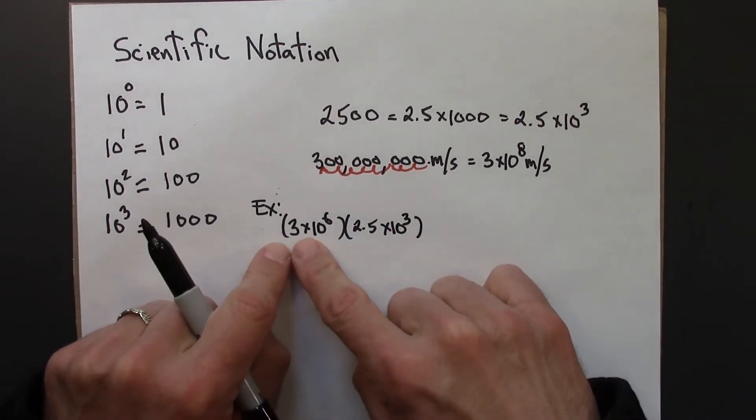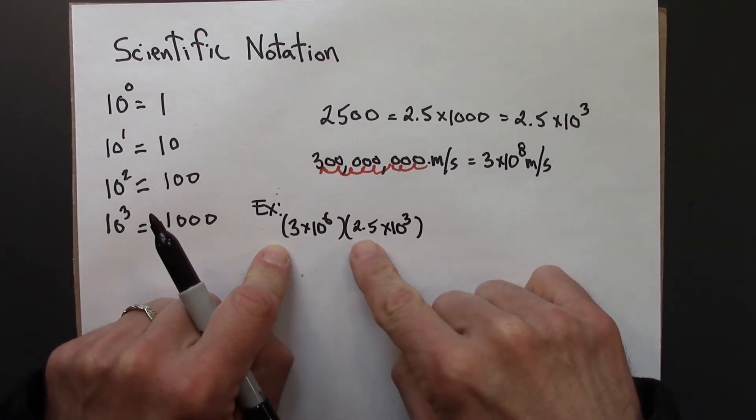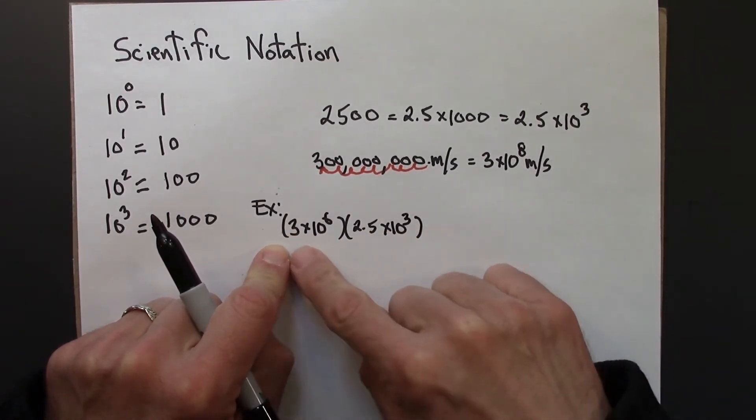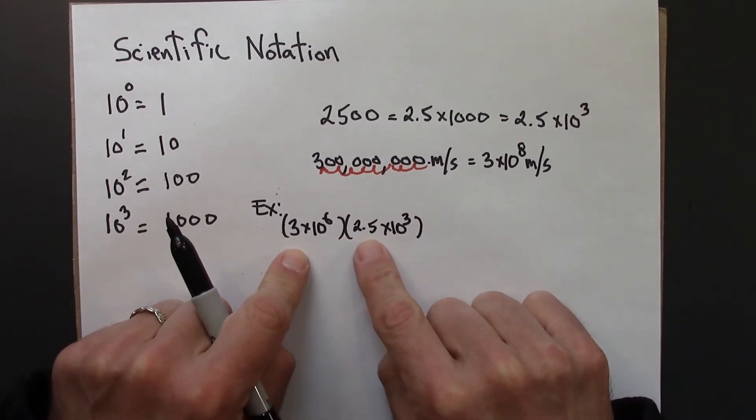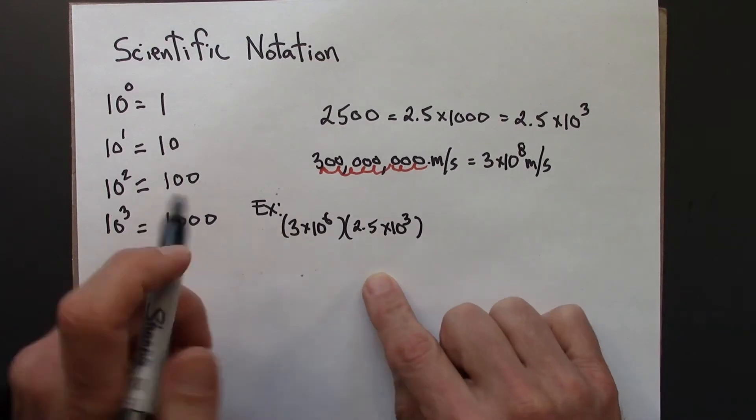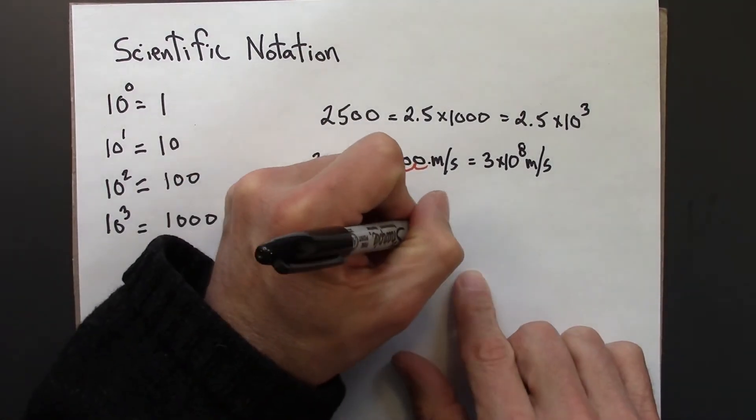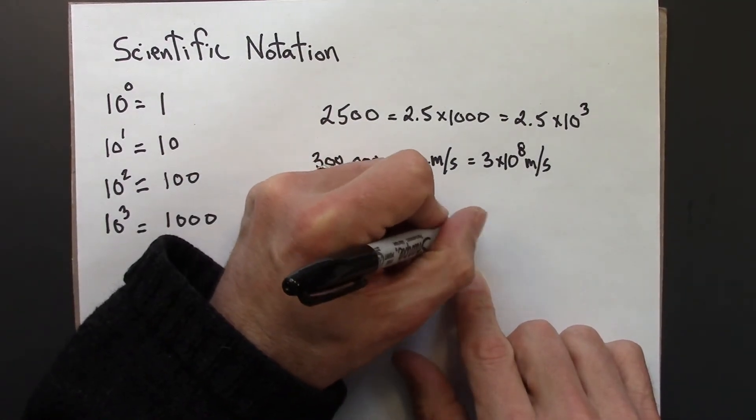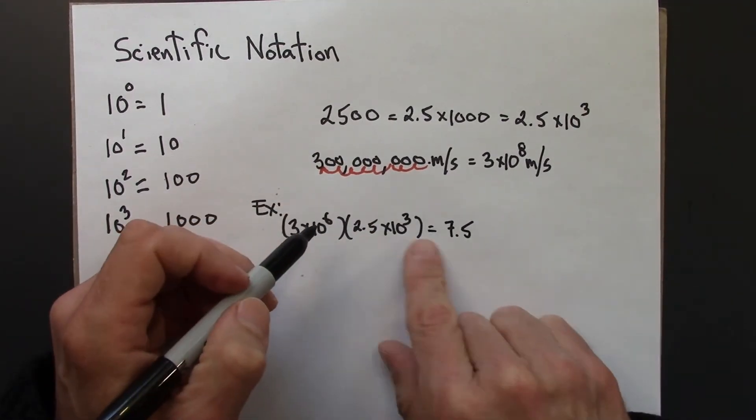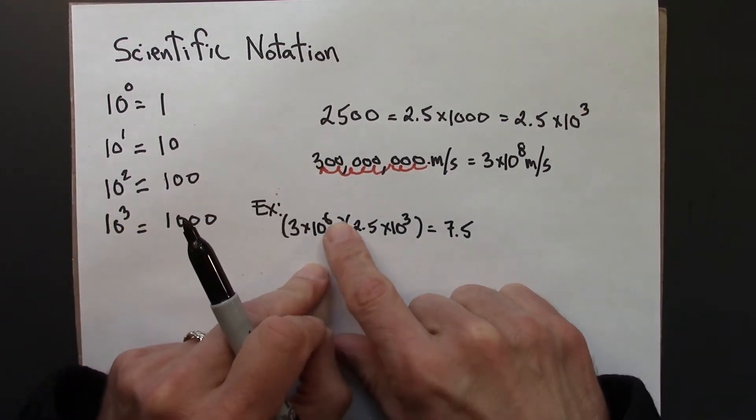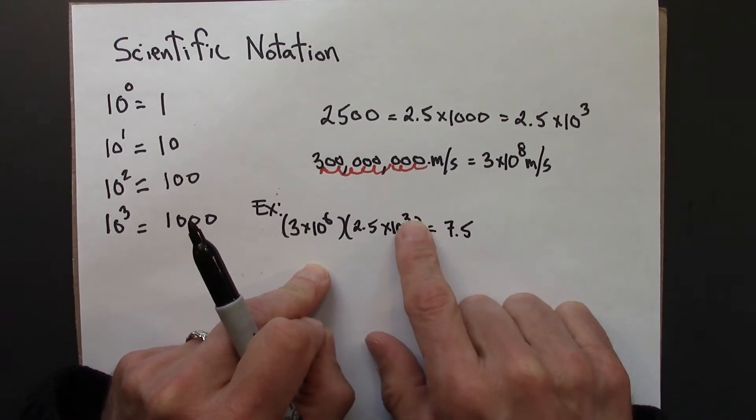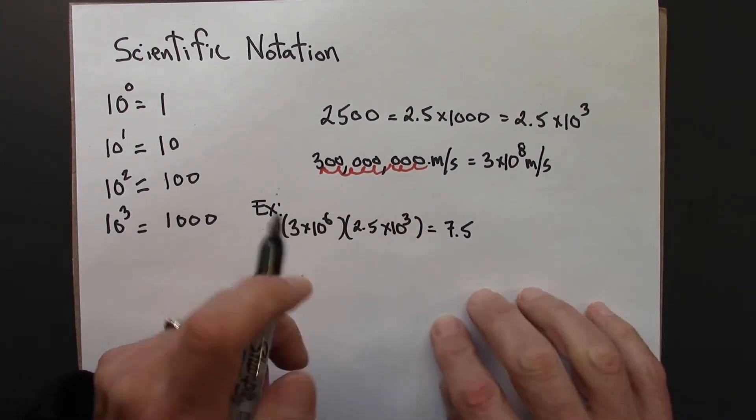So multiplication. This is 3 times this, times this, times this. We can multiply in any order we want. 3 times 2.5 happens to be 7.5. I'll write this like this. This is 7.5. And then these exponents you would add. 10 to the 6 times 10 to the 3 is 10 to the 9. Because 6 plus 3 is 9.